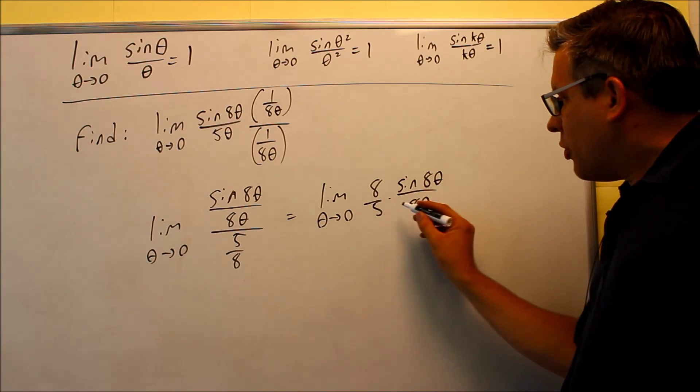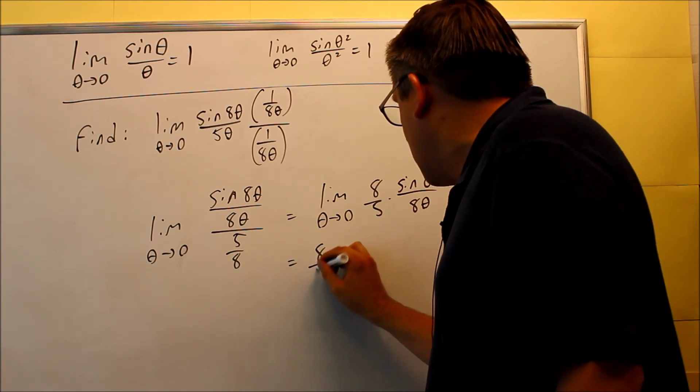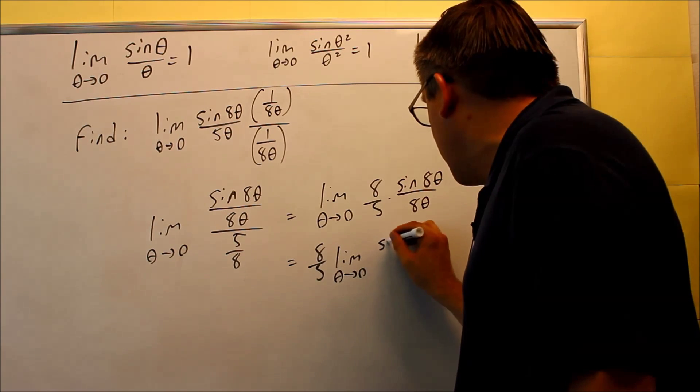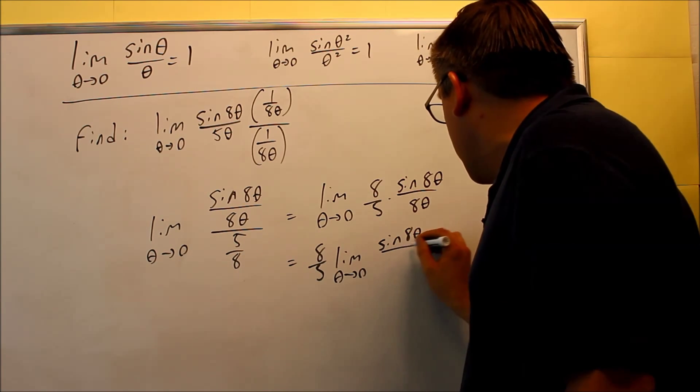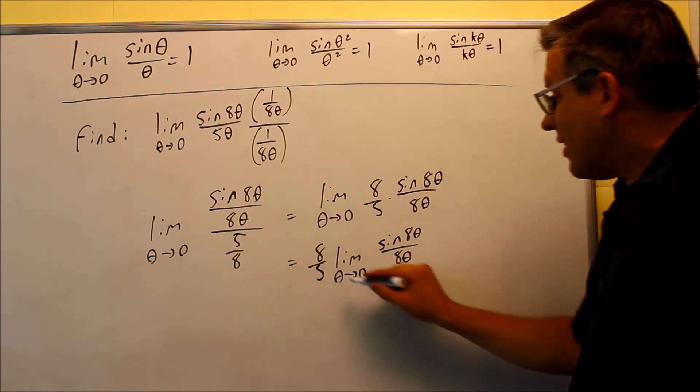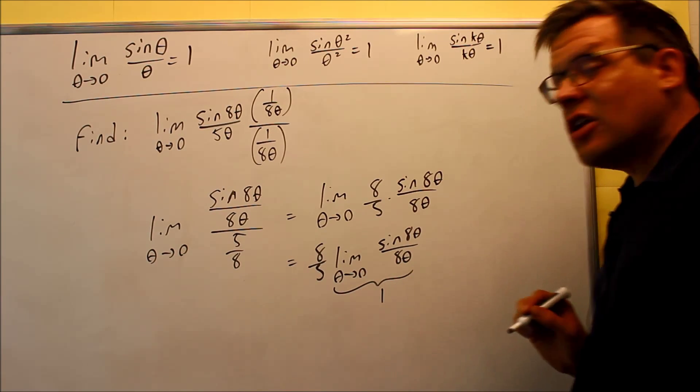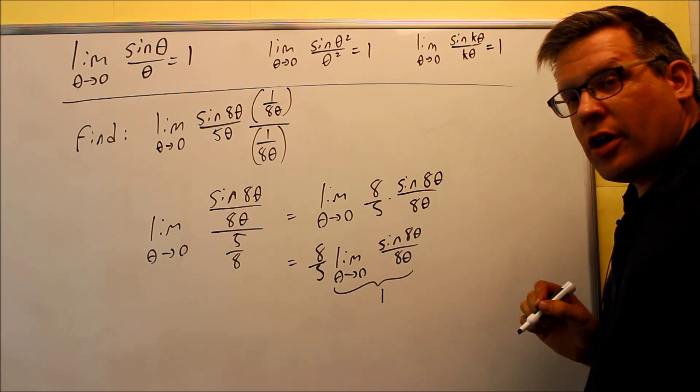Next, limit properties tells us that we can pull the eight fifths out in front, so we have limit as theta goes to zero of sine of eight theta over eight theta. Now this part right here, this whole part, is going to be equal to one because of this property there.